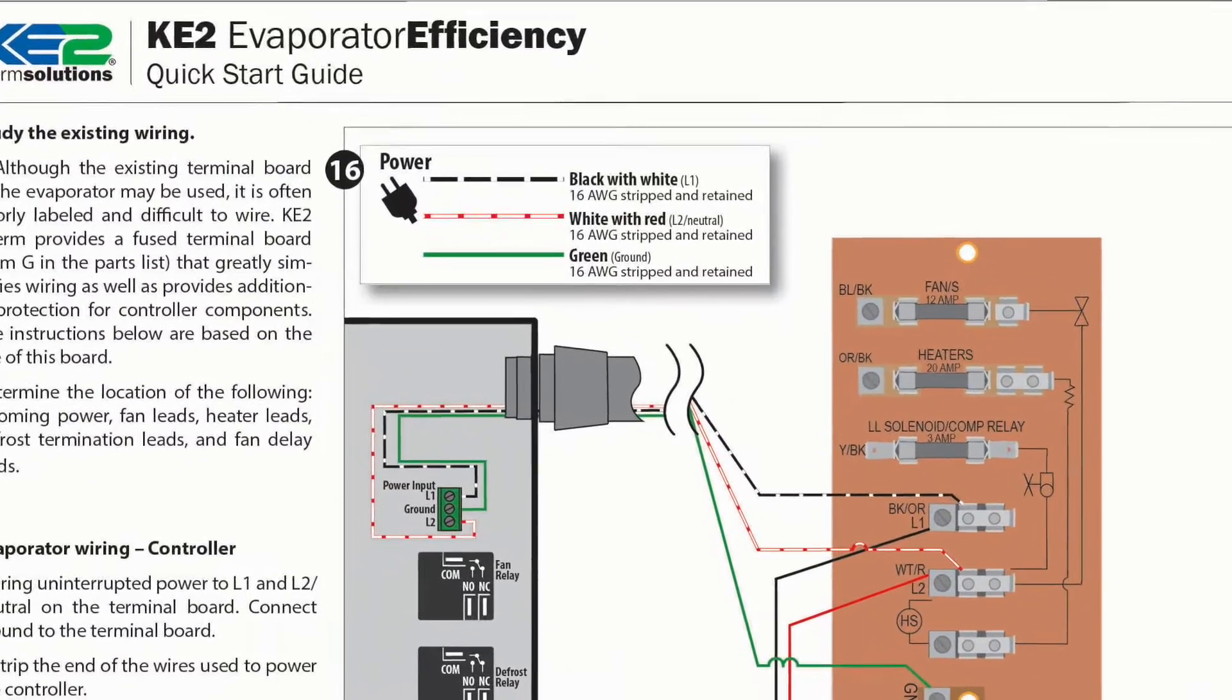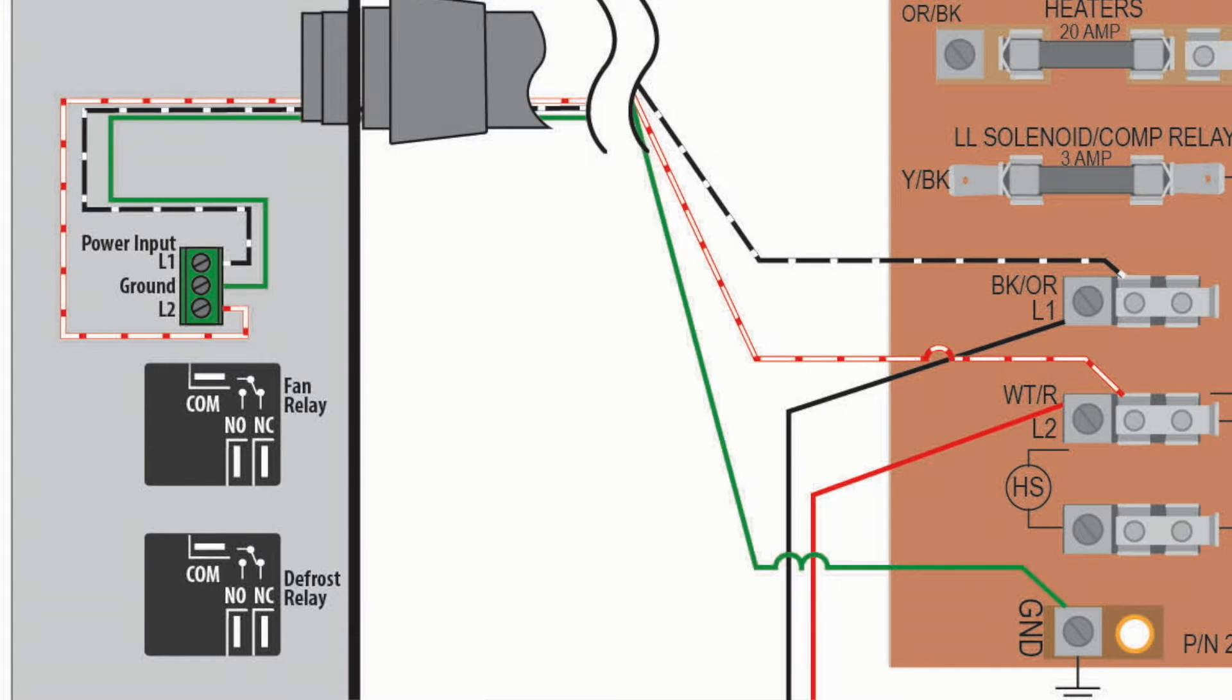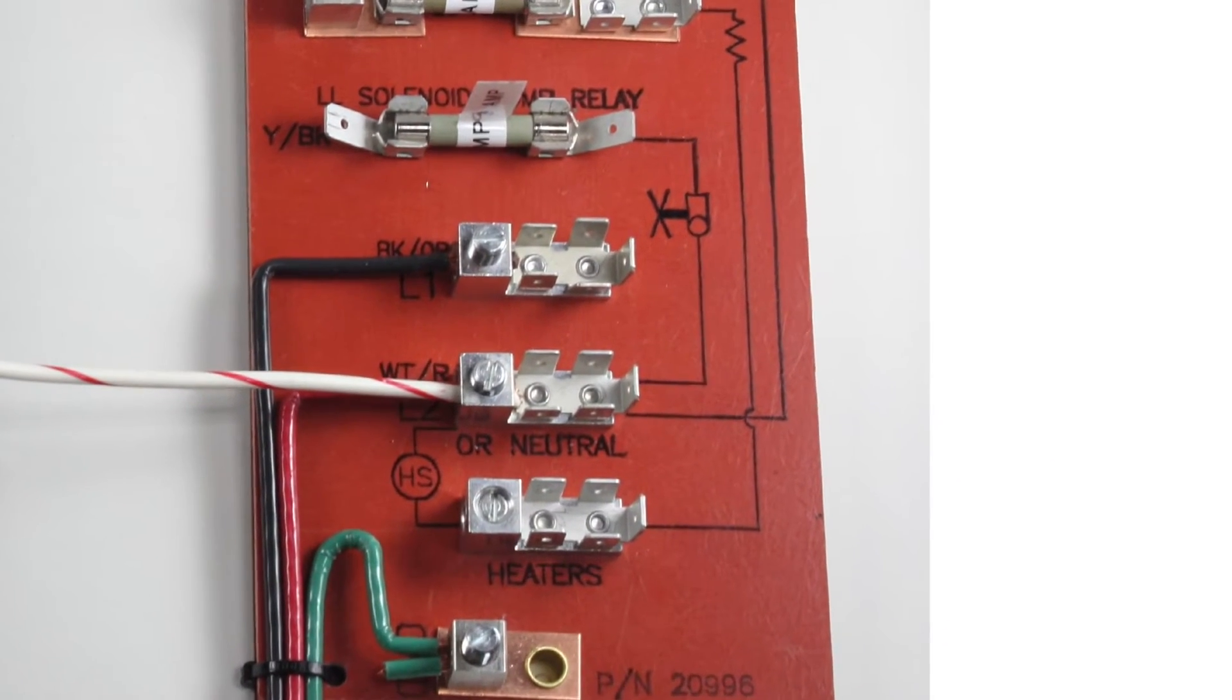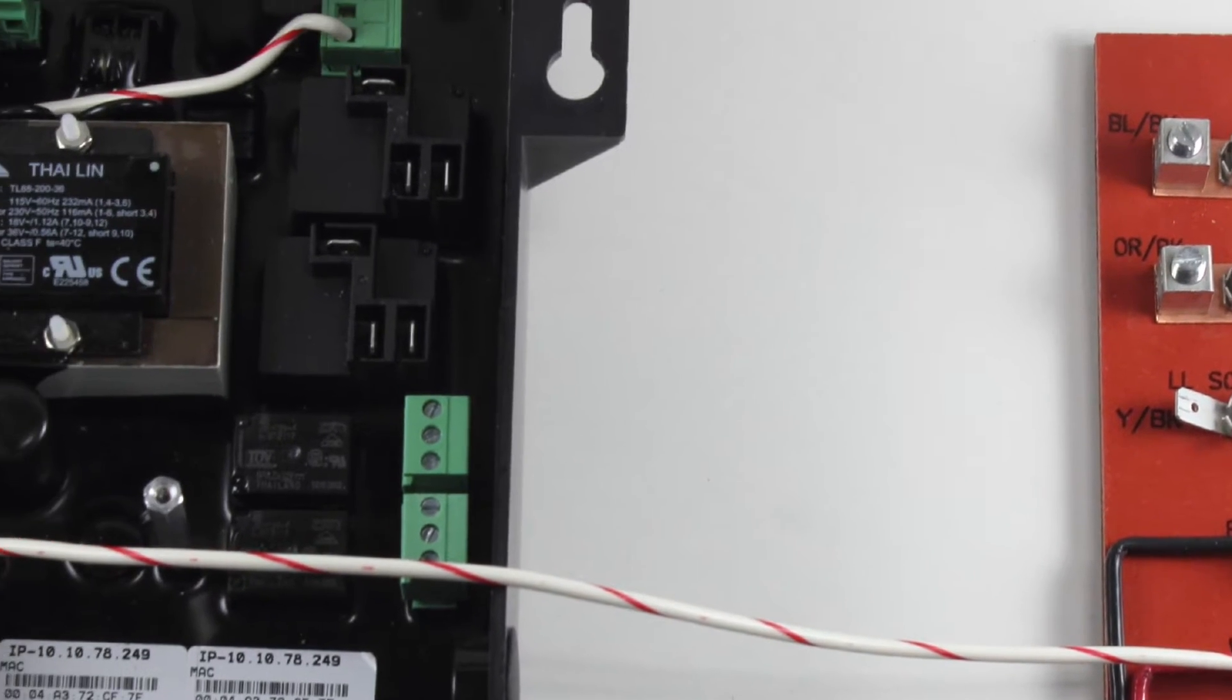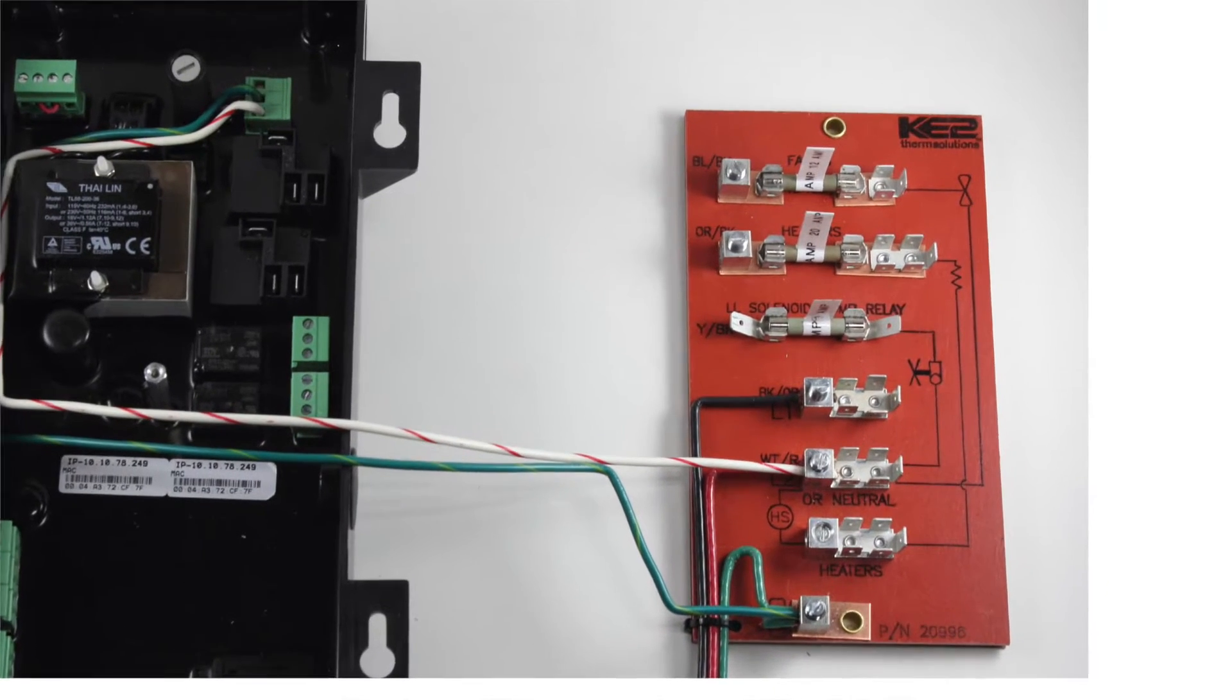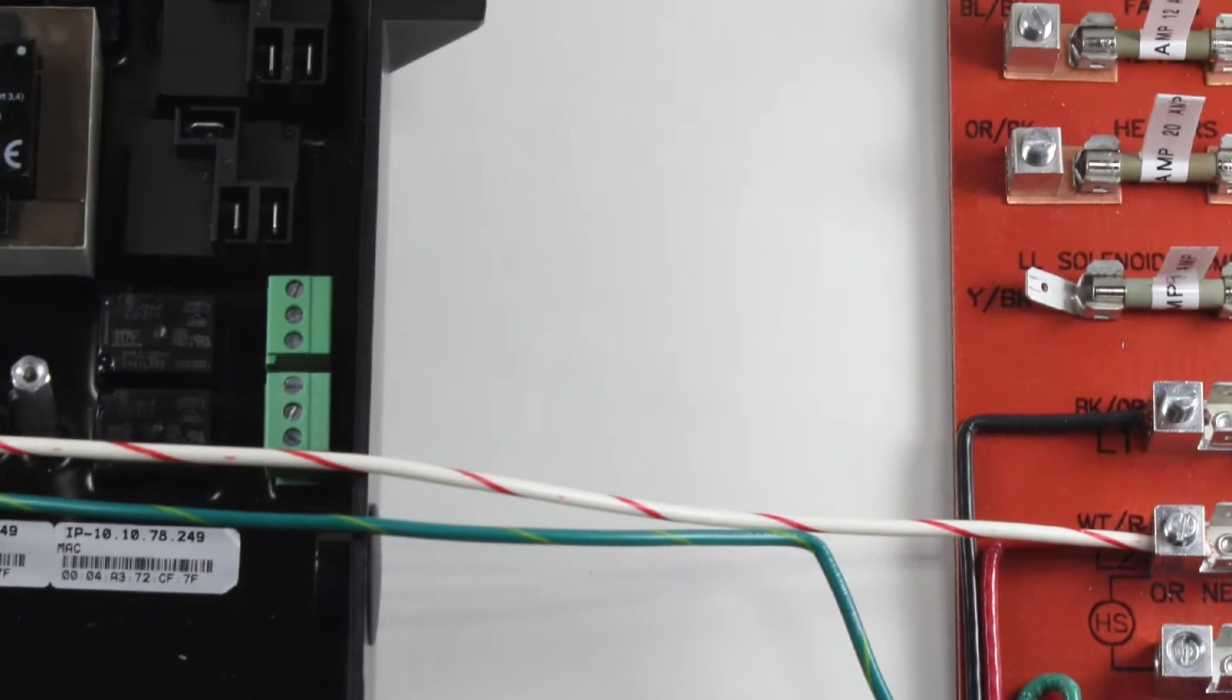The next few steps are to bring the 208 volt power from the terminal board to the controller. Let's begin with line 2 as shown using the white with red stripe. Now, let's connect the ground from the terminal board incoming power to the controller using the green wire.